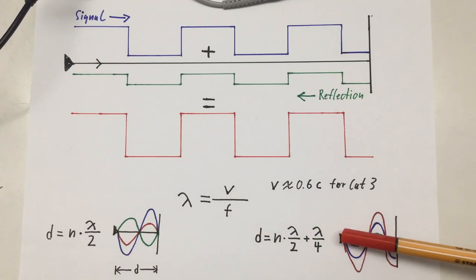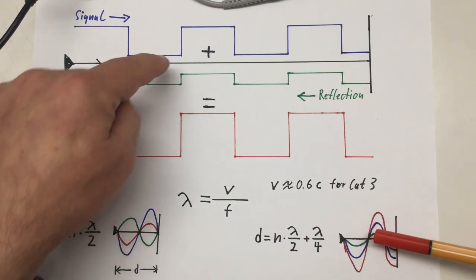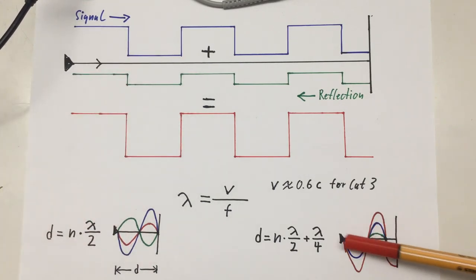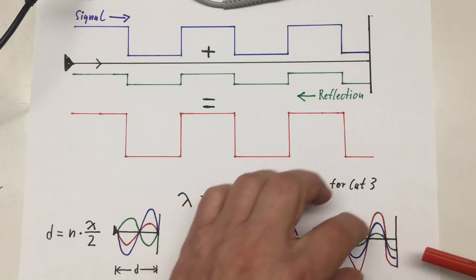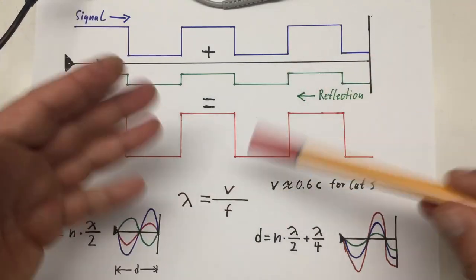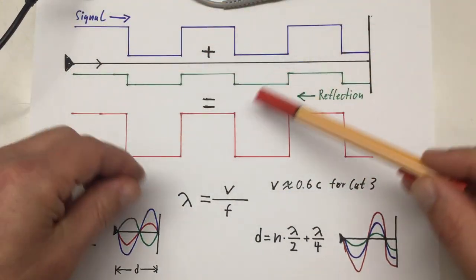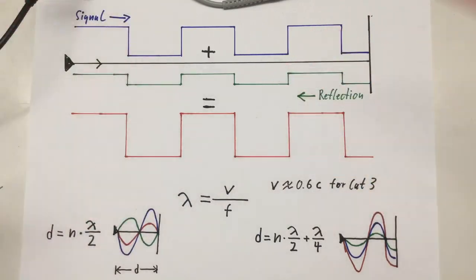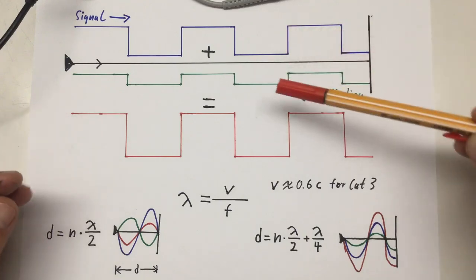But if our cable length d is n times lambda over 2 plus lambda over 4, then we have a constructive interference. That is, our blue signal is reflected exactly in phase, and we retain the signal form but at a higher amplitude.